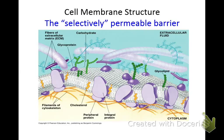You know what selective is — that's being choosy, right? And so the cell membrane is choosy, or selective. It lets some molecules like water and food in, but it doesn't let some particles into the cell membrane. So not everything is welcome inside. The cell selects what materials can enter.